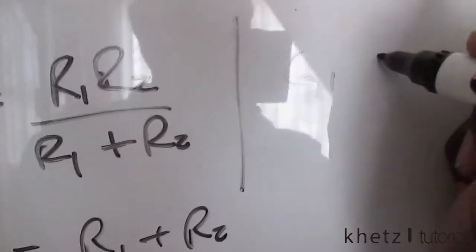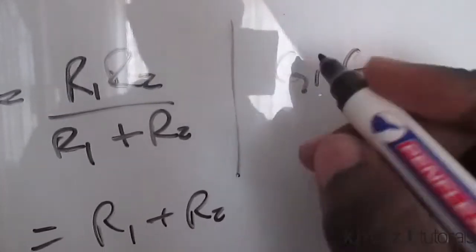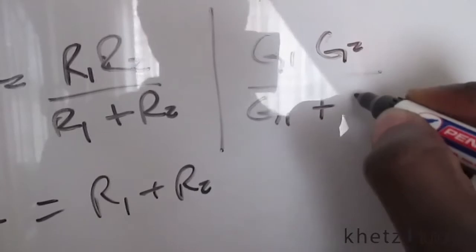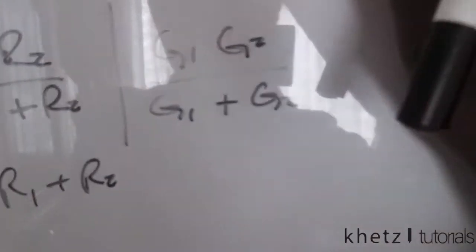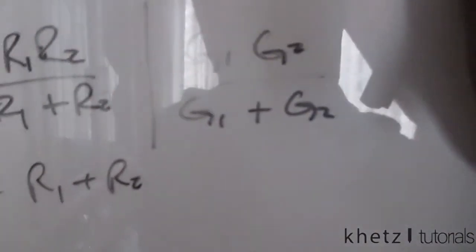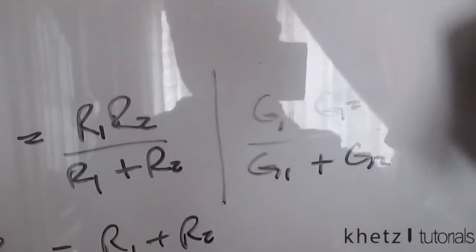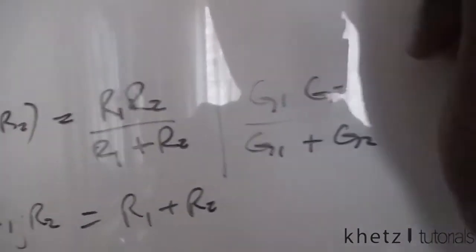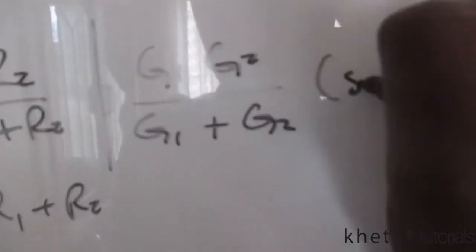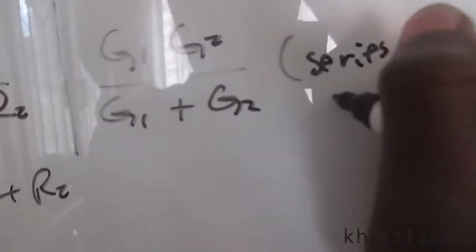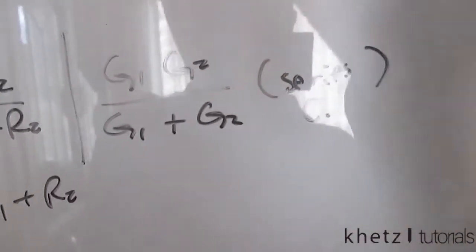So G1, G2 divided by G1 plus G2 when we have conductances in series. So this is for series conductances. So just say C.